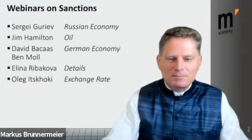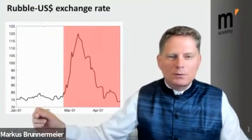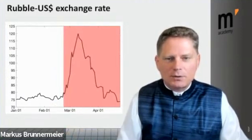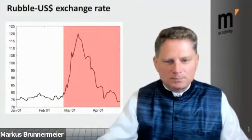I took a figure from Oleg's paper where he analyzes the exchange rate. It shows that the ruble was initially depreciating but is now appreciating again. Since Russia invaded Ukraine, the ruble first became much weaker because of sanctions, but since then it came back and is even stronger than it was initially.